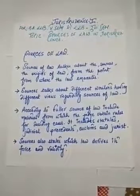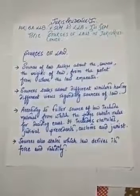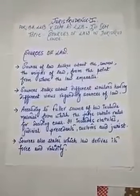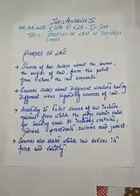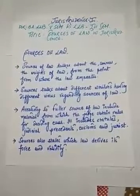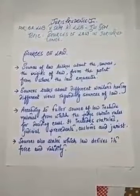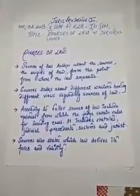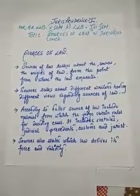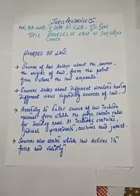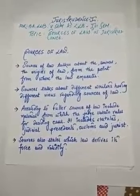These points can be summarized as: the origins of law, the views of different legal writers, and Fuller's view that sources include judicial precedents, rules for deciding cases, customs, and jurists who have propounded legal precedents. Lastly, sources of law also states which law derives its force and validity.